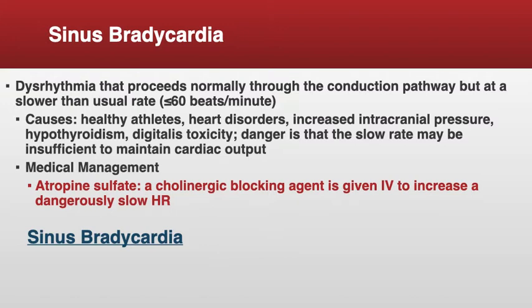If you have someone who has a dangerously low heart rate — meaning they are symptomatic, showing signs of not tolerating it, whether it's decreased cardiac output, decreased level of consciousness, difficulty with alertness, or slowing respirations — you want to give them atropine IV for a dangerously slow heart rate. Anticipate that your action with someone with a very low heart rate having severe symptoms will be to give atropine.